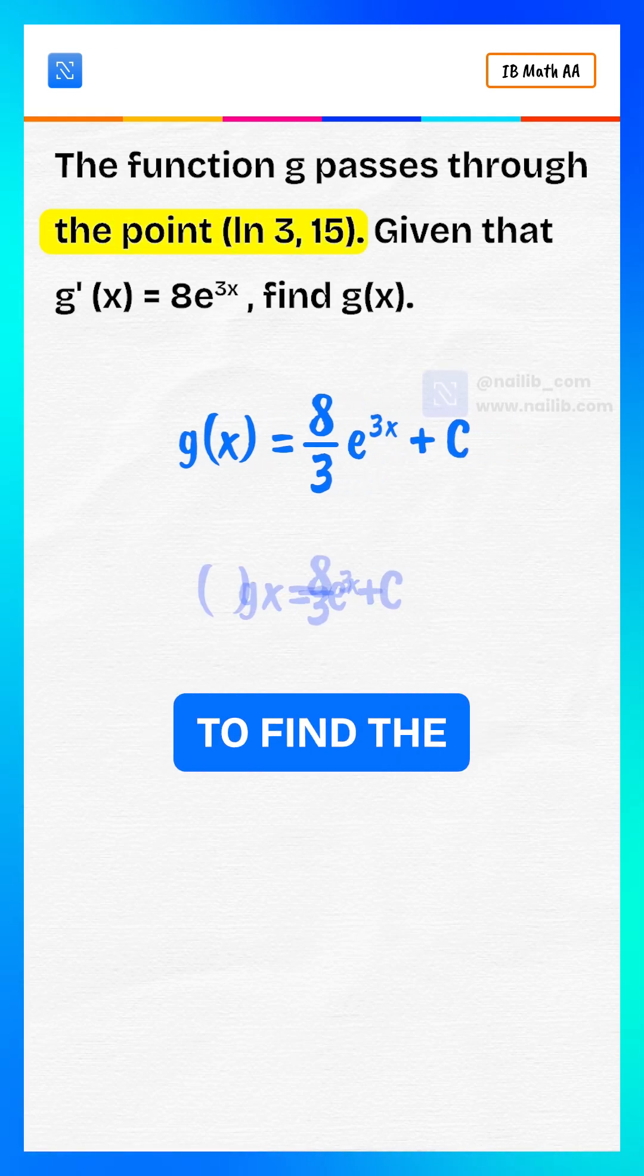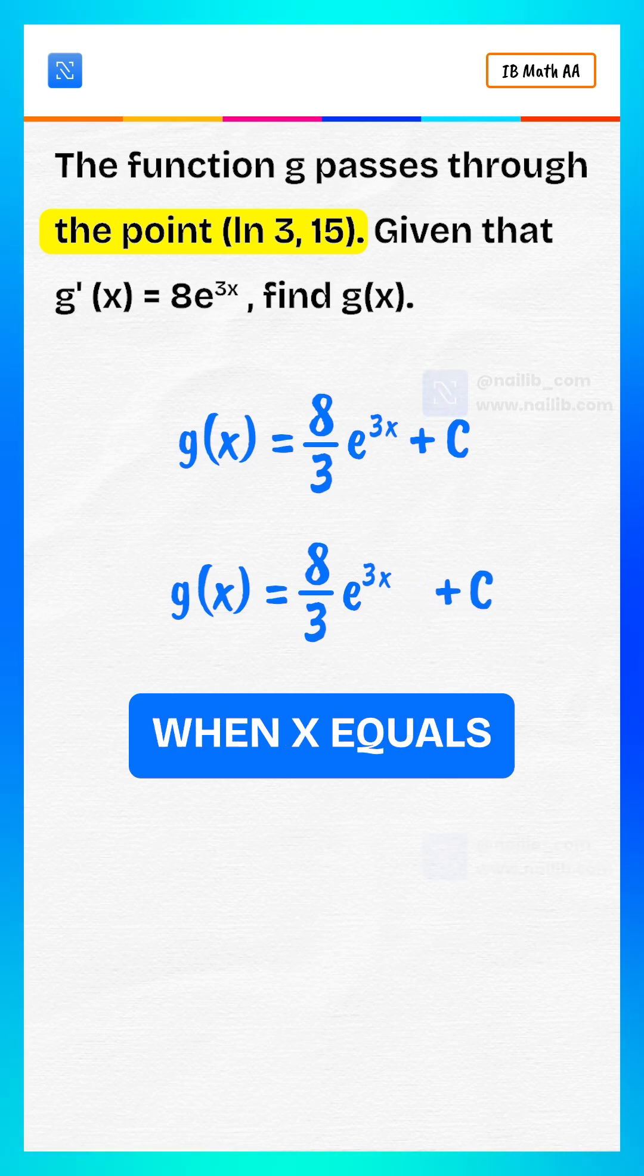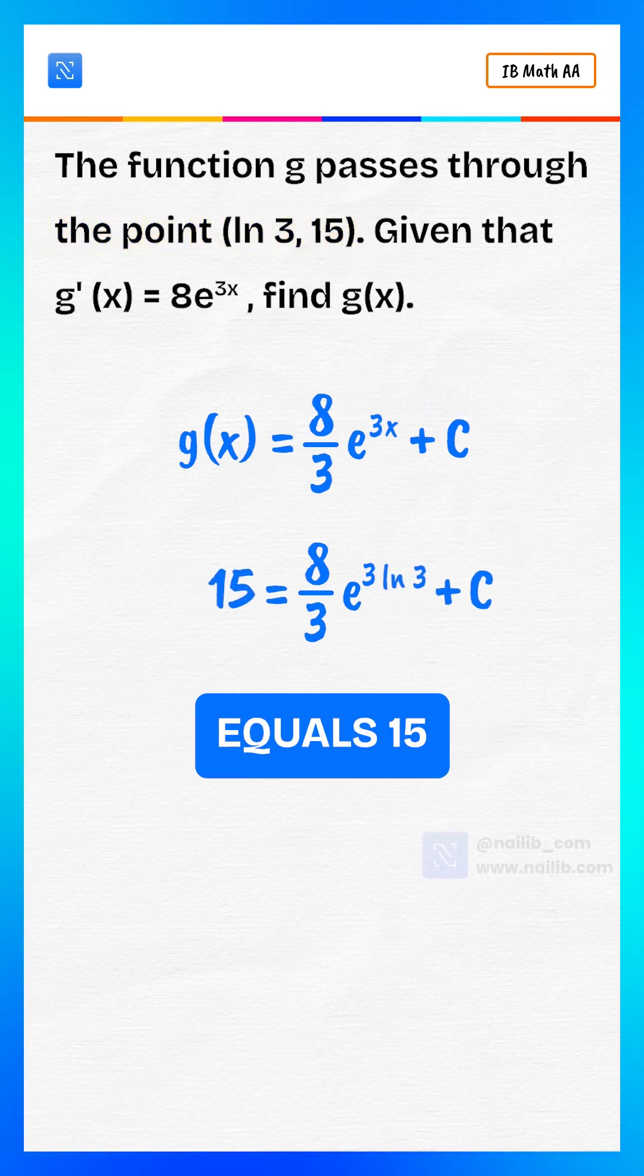Now use the given point to find the constant c. When x equals natural log of 3, g of x equals 15.